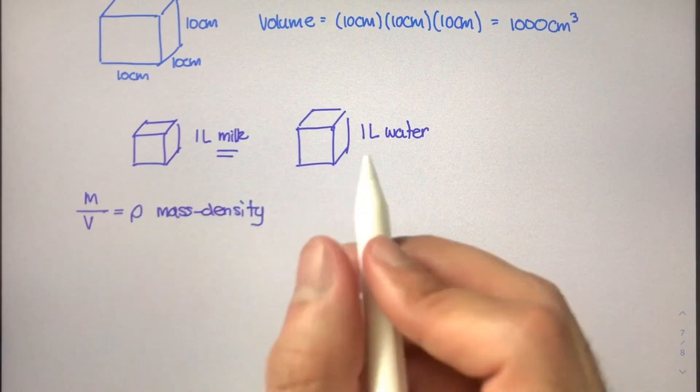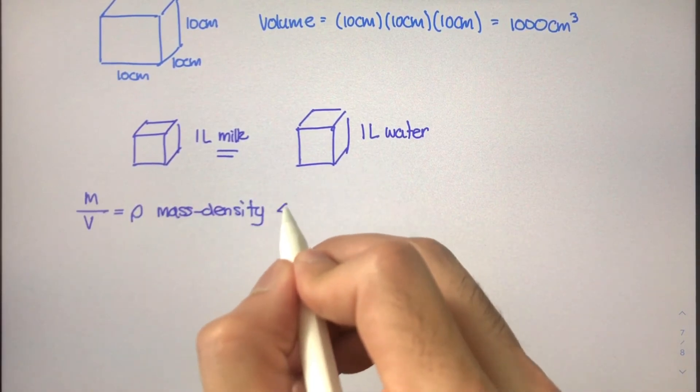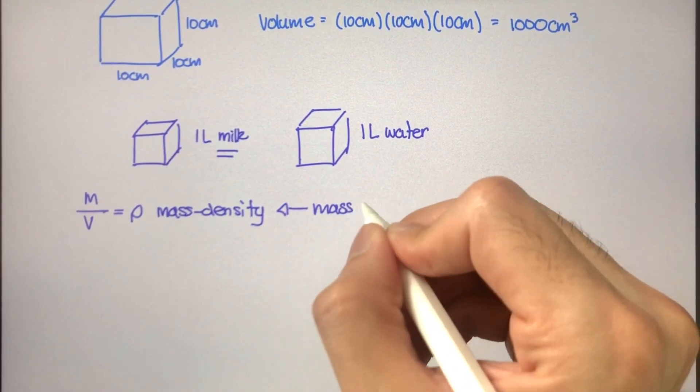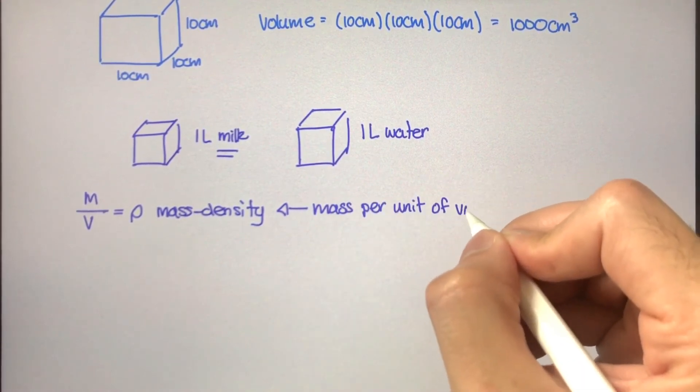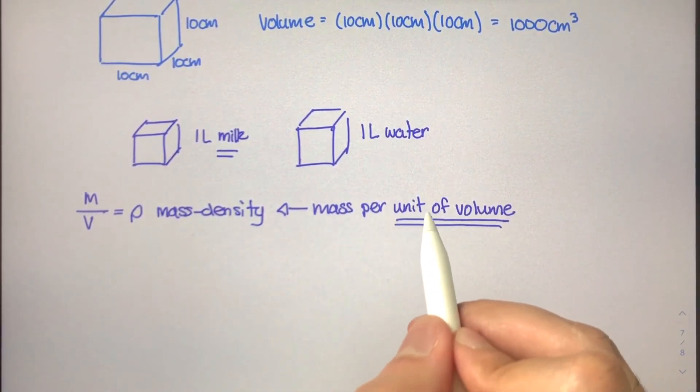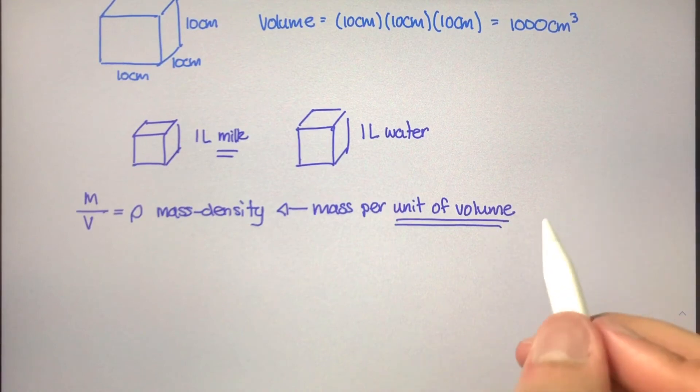And more specifically, mass density is really just the mass per unit of volume. And this is important. How much mass is there being taken up in a single unit of volume? Well, what is this unit of volume? So to illustrate that...